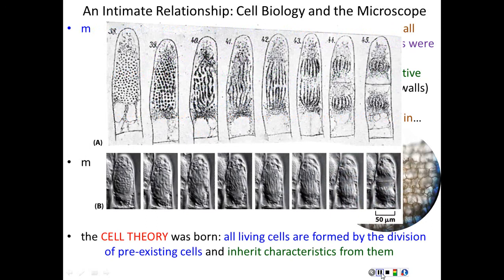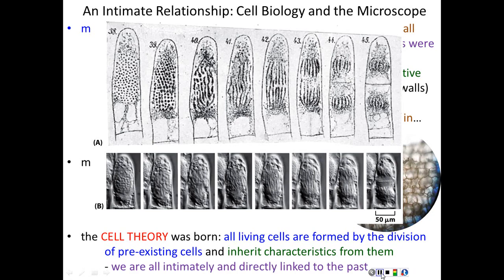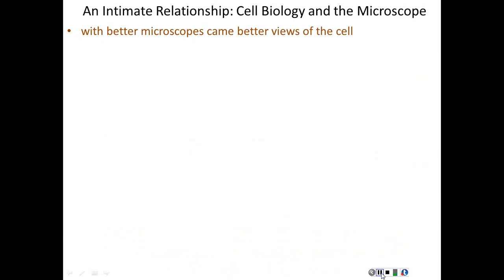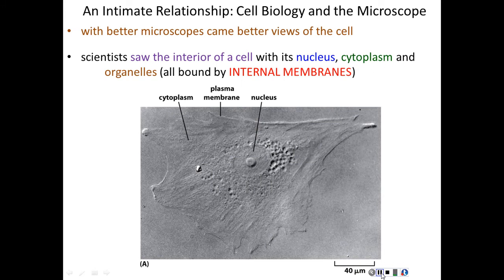Based on what all these scientists were seeing, the cell theory was born. The cell theory is a very simple theory, but it is the underlying theory that governs all of cell biology. Simply put, the cell theory says that all living cells are formed by the division of pre-existing cells, inheriting characteristics from those pre-existing cells. All things are made of cells, and all cells came from previous cells — except that one ancestor cell, just one cell long ago in that ocean. Because all cells came from previous cells, and all cells can trace themselves back to that one ancestor cell, we are all intimately related to one another. All life on this planet is intimately related and directly linked to the past.